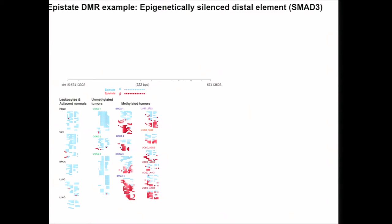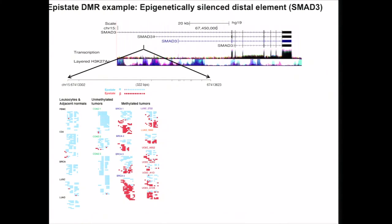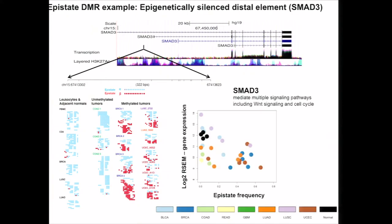We wondered where this locus is in the genome. Looking at the genome browser, we see this locus lies 5,000 base pairs upstream of the gene called SMARCD3, and it overlaps with enrichment of the histone mark H3K27 acetylation, indicating this region is an active regulatory region. This led us to check the transcriptional activity of this gene, where we found a nice inverse correlation between the epistate frequency on the X-axis and gene expression levels from RNA-seq on the Y-axis, with each point representing one sample from nine cancer types, indicating this potential enhancer region plays a role in regulating Wnt signaling and cell cycle genes in certain cancers.